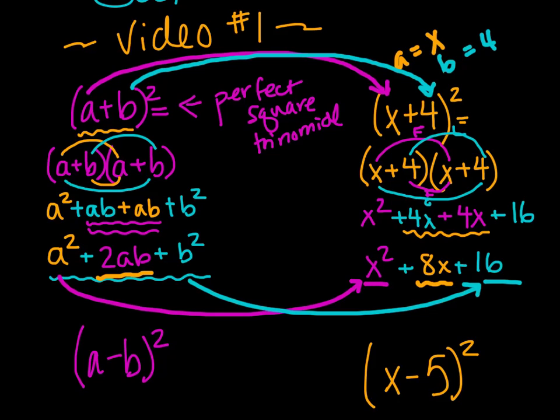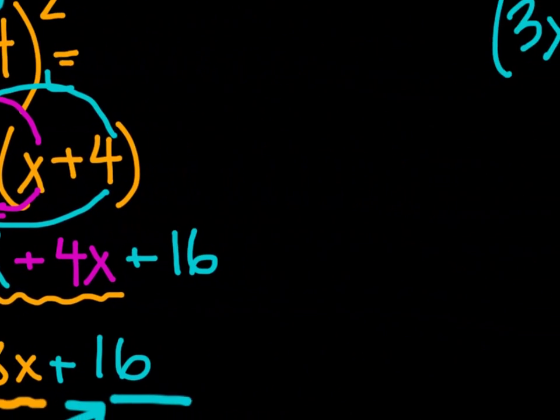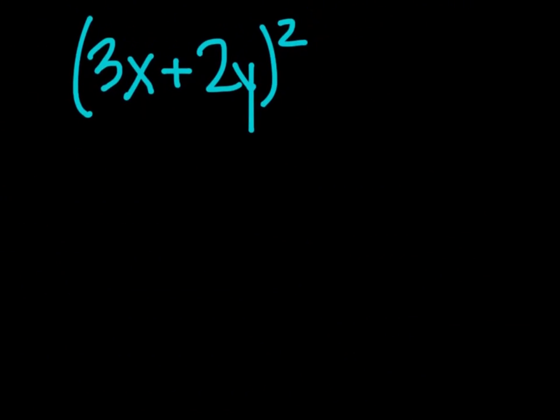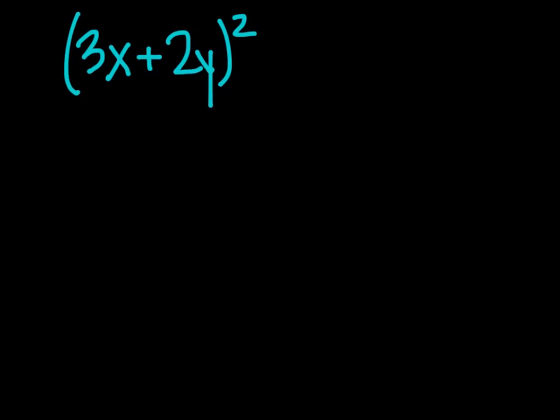Let's do this exact situation for our very last problem. We have 3x plus 2y and that whole quantity squared. So let's identify our a. There's a, it is 3x. We're going to also identify our b. b is equal to 2y.